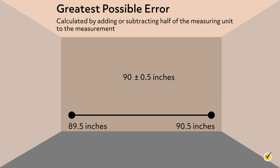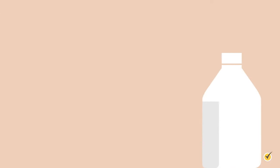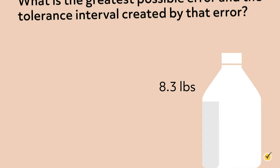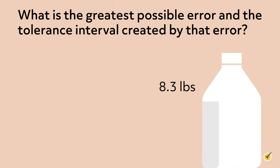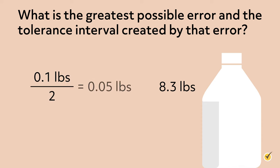Let's look at an example of using the greatest possible error together. One gallon of water weighs about 8.3 pounds. What is the greatest possible error and the tolerance interval created by that error? First, we need to identify the unit of measurement. In this case, the unit of measurement is one-tenth, or 0.1. Therefore, the greatest possible error is one-half of one-tenth, or 0.05, and the tolerance interval would be 8.3 ± 0.05 pounds.